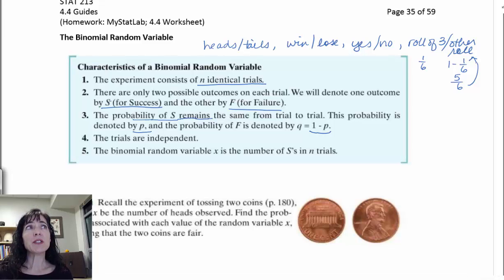The trials are independent. The trials are independent. And to be binomial random variable, that means that when you do one trial, its outcome has no effect on the other trials that you're going to do.